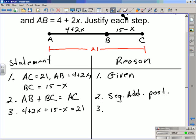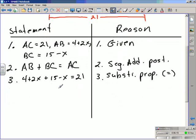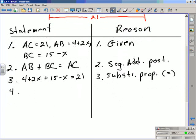I replaced each of the segments with the algebraic expression or expression that we were told that they were equal to at the beginning of the problem. And this is the substitution property of equality. I take the AB, the BC, and the AC out and I replace them with the 4 plus 2x, the 15 minus x and the 21 respectively.